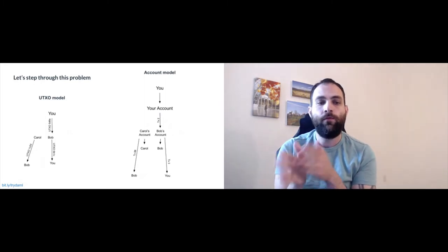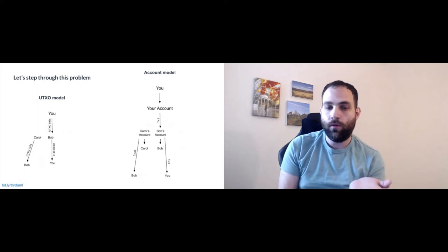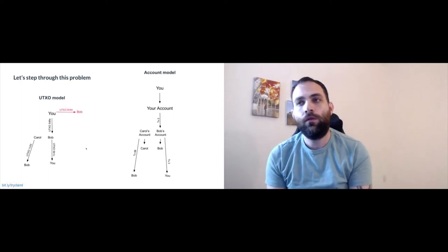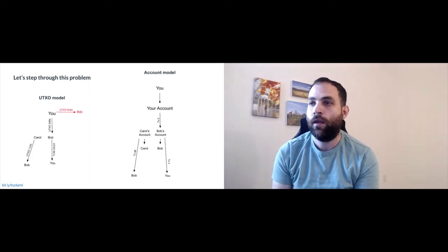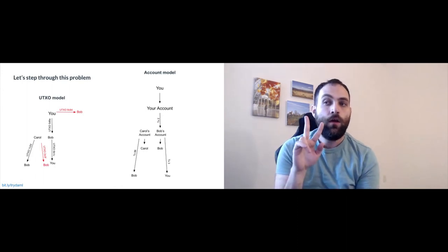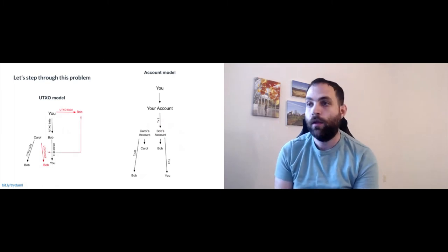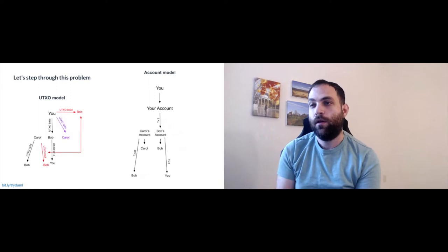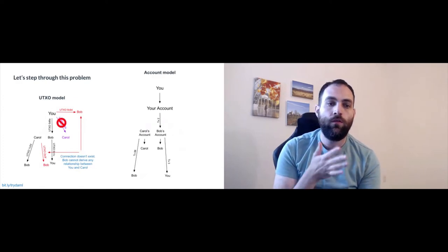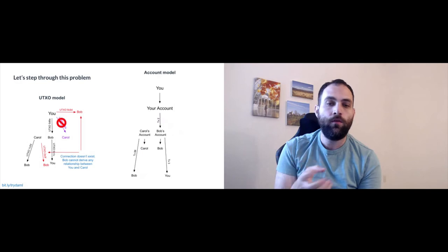Bob studies your distributed ledger and the transactions necessary to start a project — to instantiate a project with somebody. We have two parallel universes: on the left the UTXO model, on the right the account model. The purple transactions are things Bob shouldn't be able to see; the network is designed so Bob can't see them, but Bob is going to try to indirectly get this information. Bob sees that your workflow requires two transactions — one from you to the vendor and one back — to start a project.